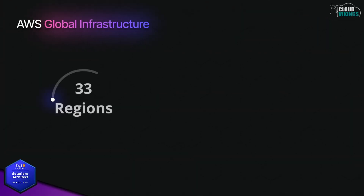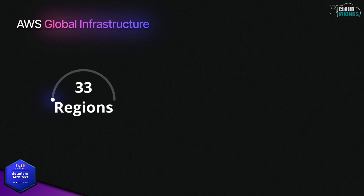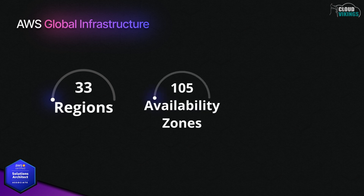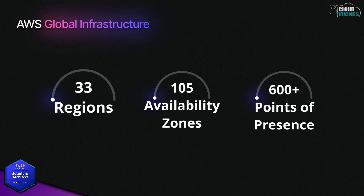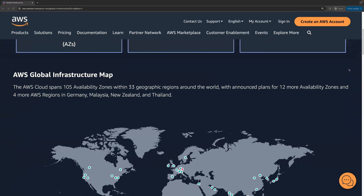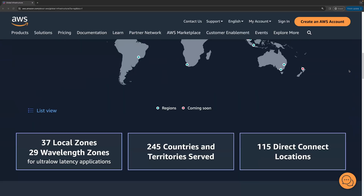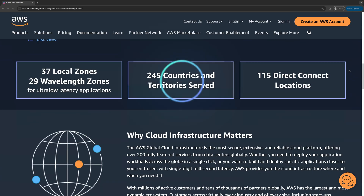At the time of recording, AWS has 33 regions, 105 availability zones, and over 600 edge location points of presence. They also have 37 local zones and 29 wavelength zones. All of this is providing various AWS services and network connectivity options across 245 countries and territories.